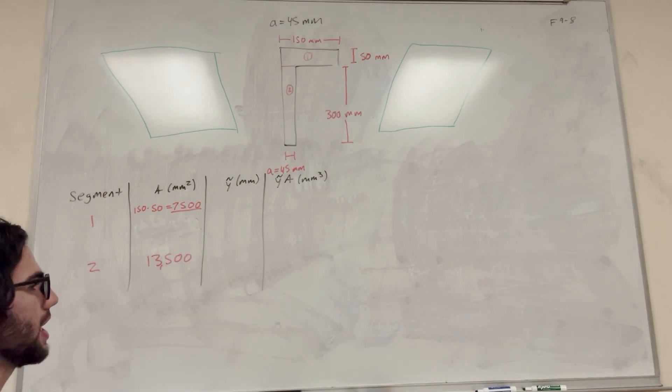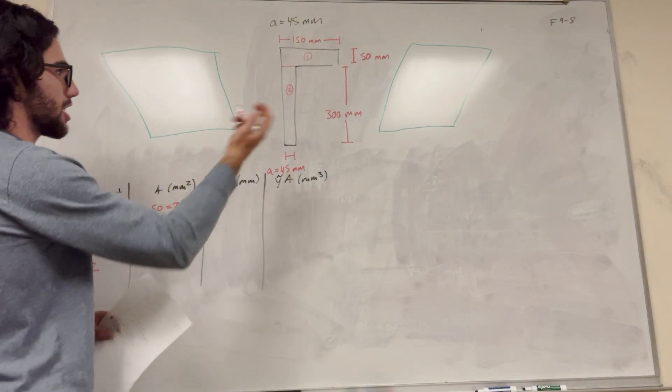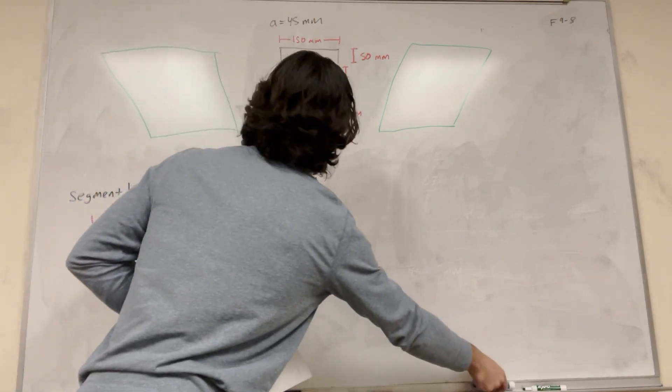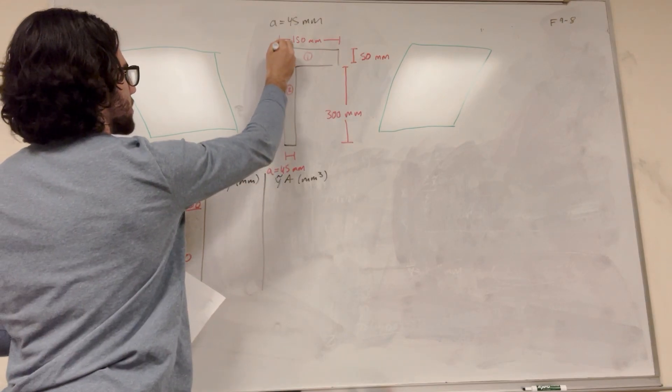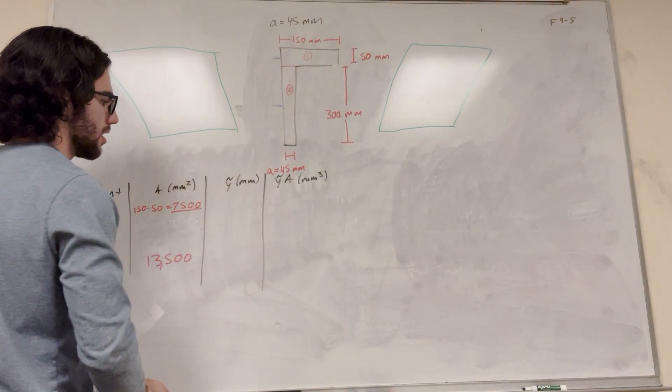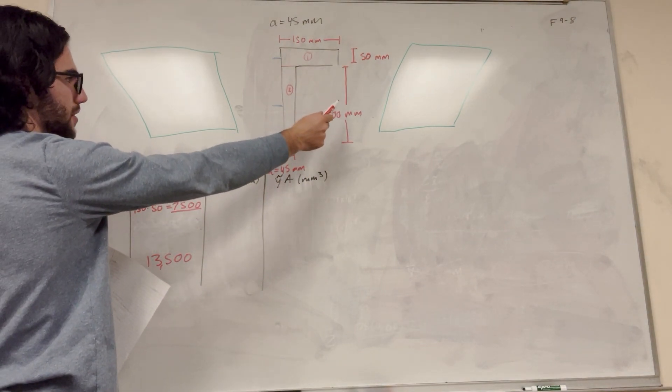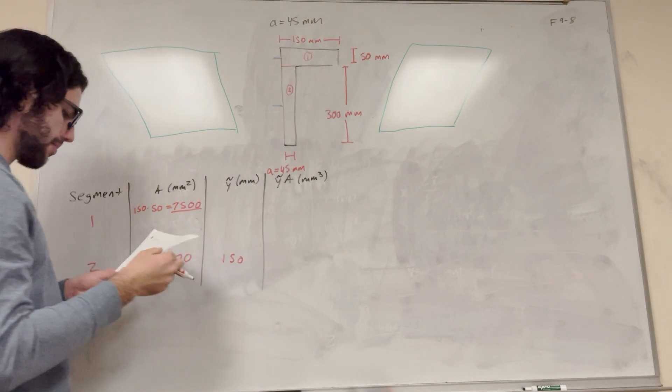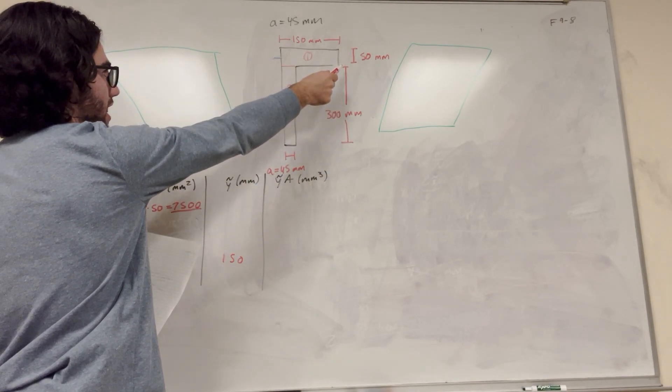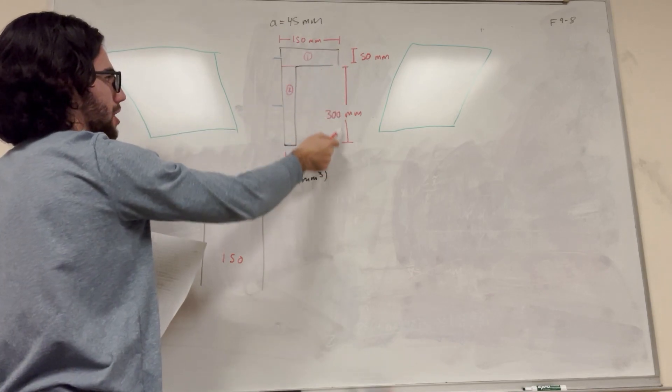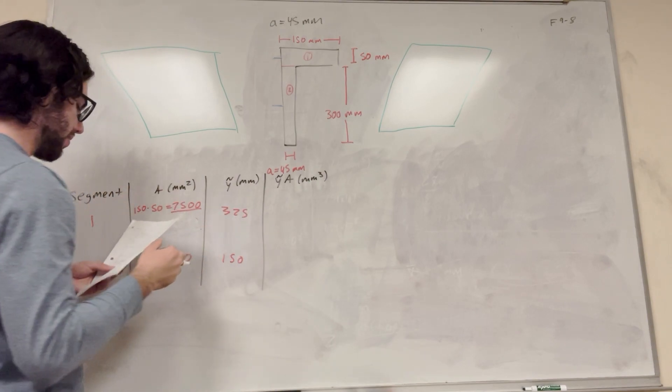All right, so now we need to find our center of masses. So for a rectangle, of course, the center of mass is just going to be at the halfway point. So we know that this one is going to be there and this one's going to be there. So now we just need to do the math to find out where these are. For the lower triangle, it's pretty easy. It's just going to be half of 300. So this is going to be 150. And then for this one, we're going to go up to 300 and then we're going to go up half of 50. So it's going to be 300 plus 25, so that'll be 325.